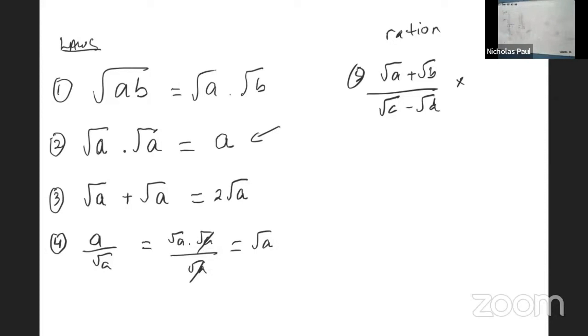Rationalize. Now we will see the conjugate of root c minus root d is root c plus root d, just change the sign in the middle.